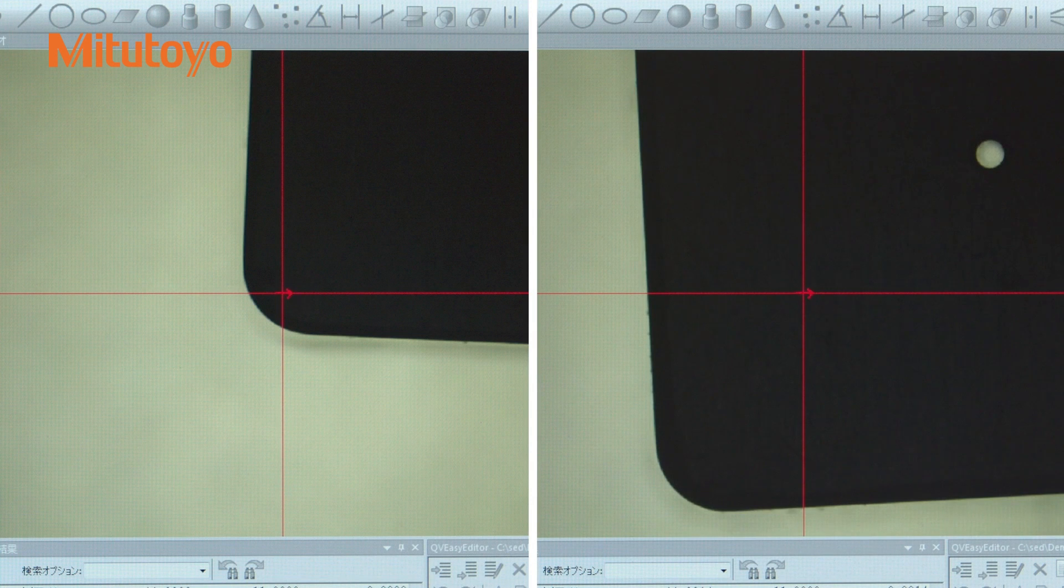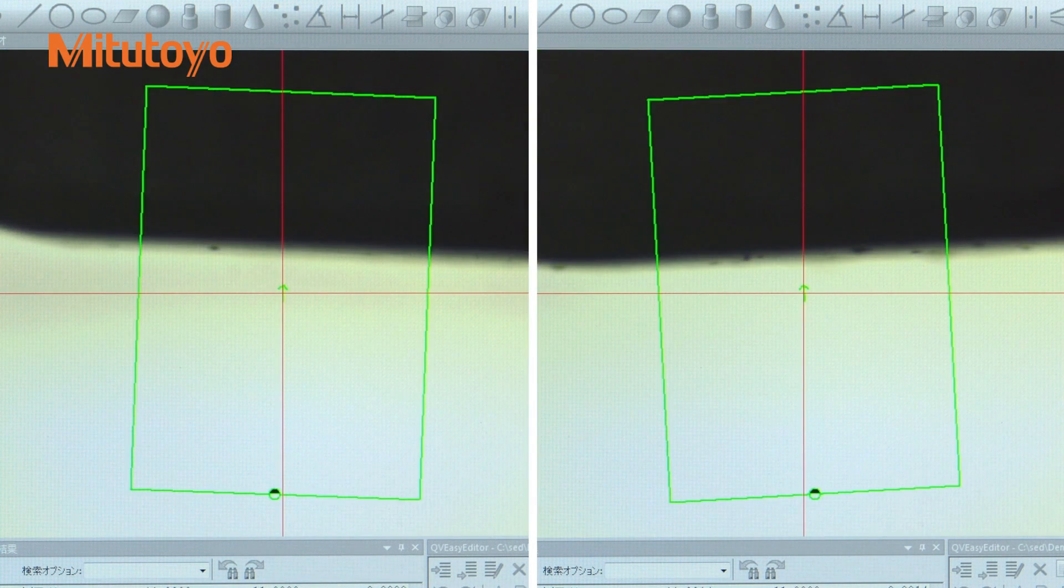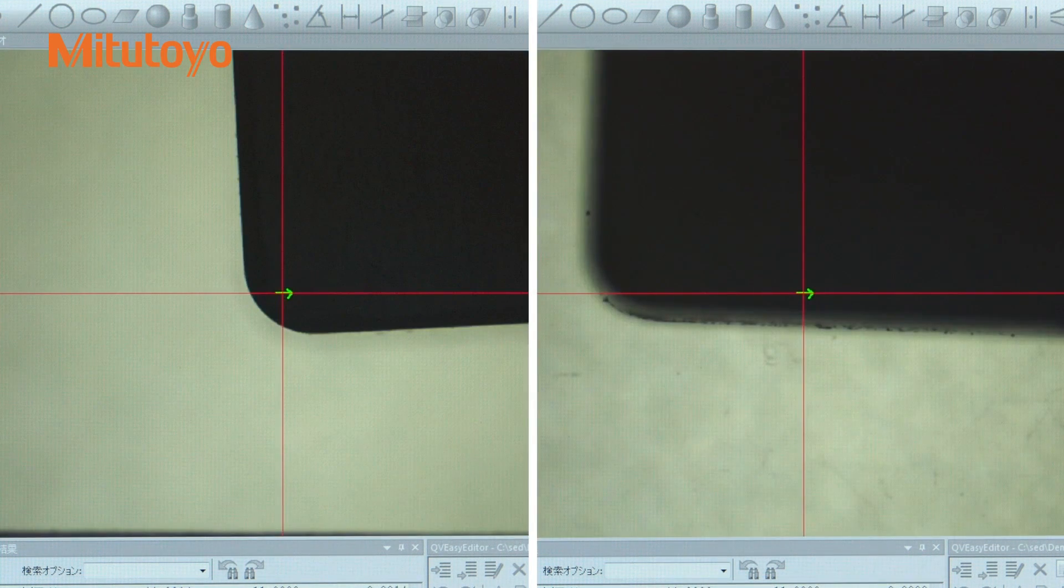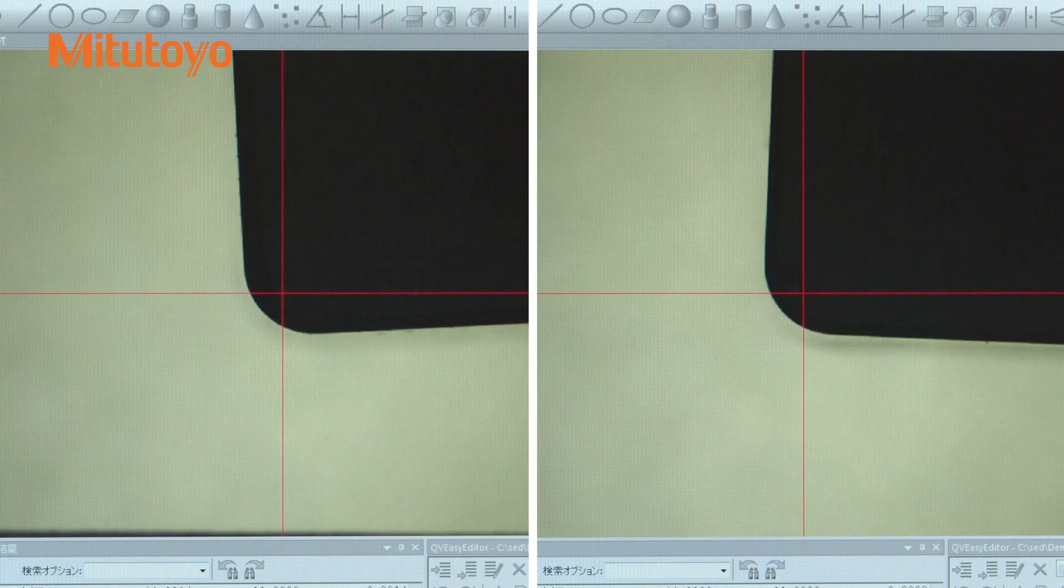Once the parts are loaded, QV Active uses edge detection and pattern recognition to locate and orientate the coordinate system. This ensures accuracy and repeatability of the measurement results.